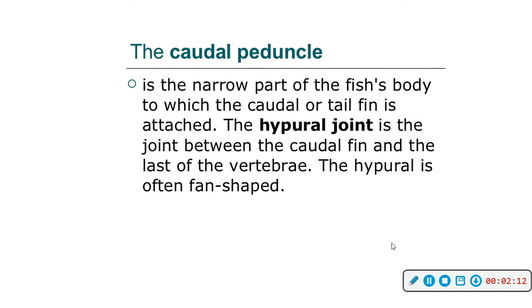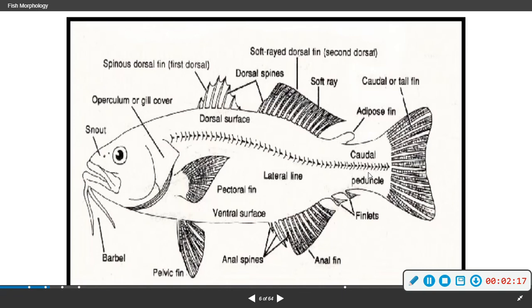Here is your caudal peduncle. Some fish will have finlets or adipose fins, and sometimes you'll have a spinous dorsal fin — very spiny dorsal fins. These are soft-ray dorsal fins. These are barbels; they look like whiskers. Catfish have barbels. This is your operculum again.